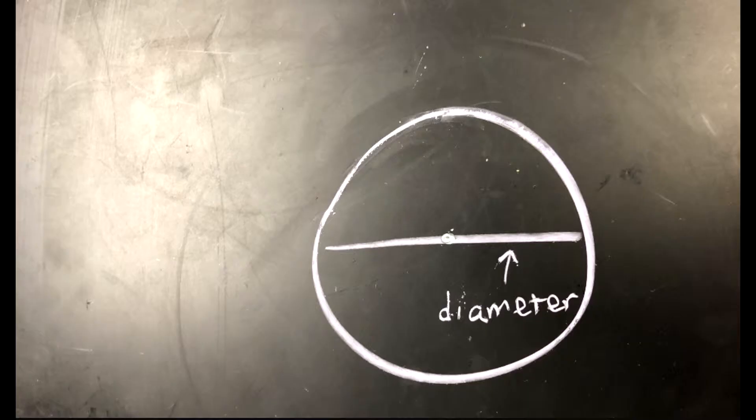The diameter is a line segment stretching from one end of the circle to the other while also crossing through the center. This divides the circle into two semi-circles, each with 180 degrees.